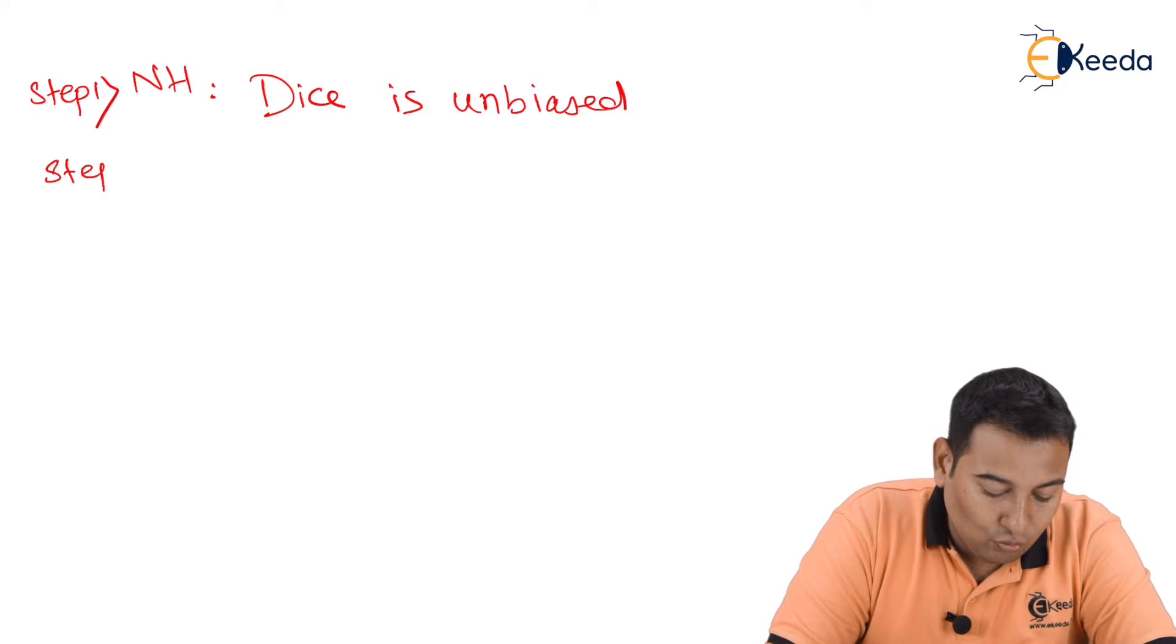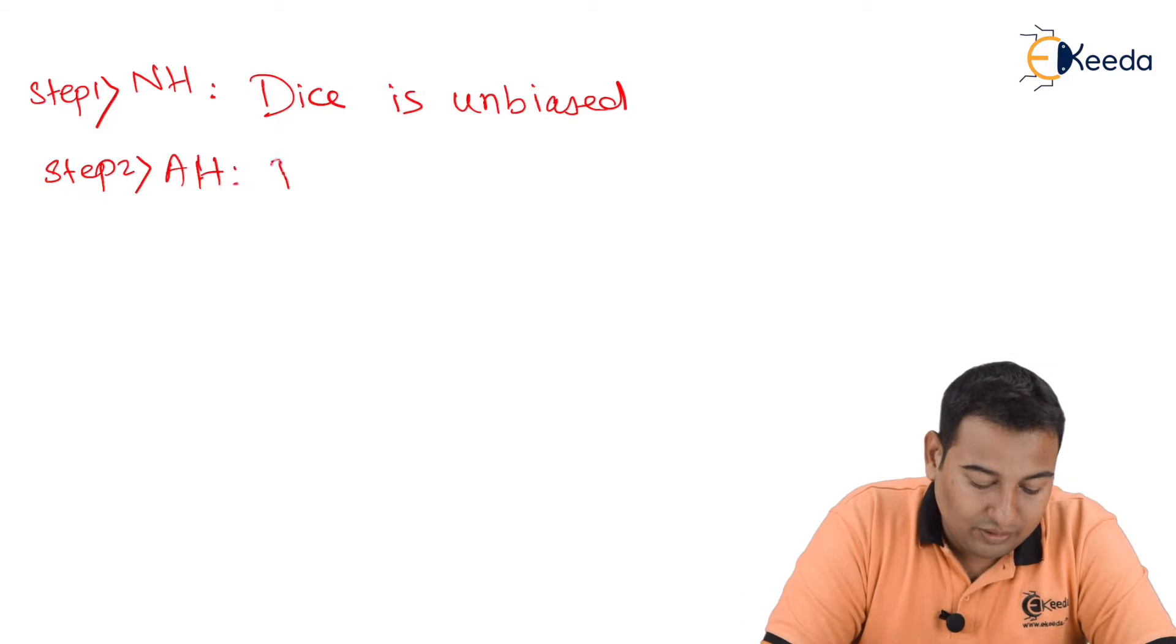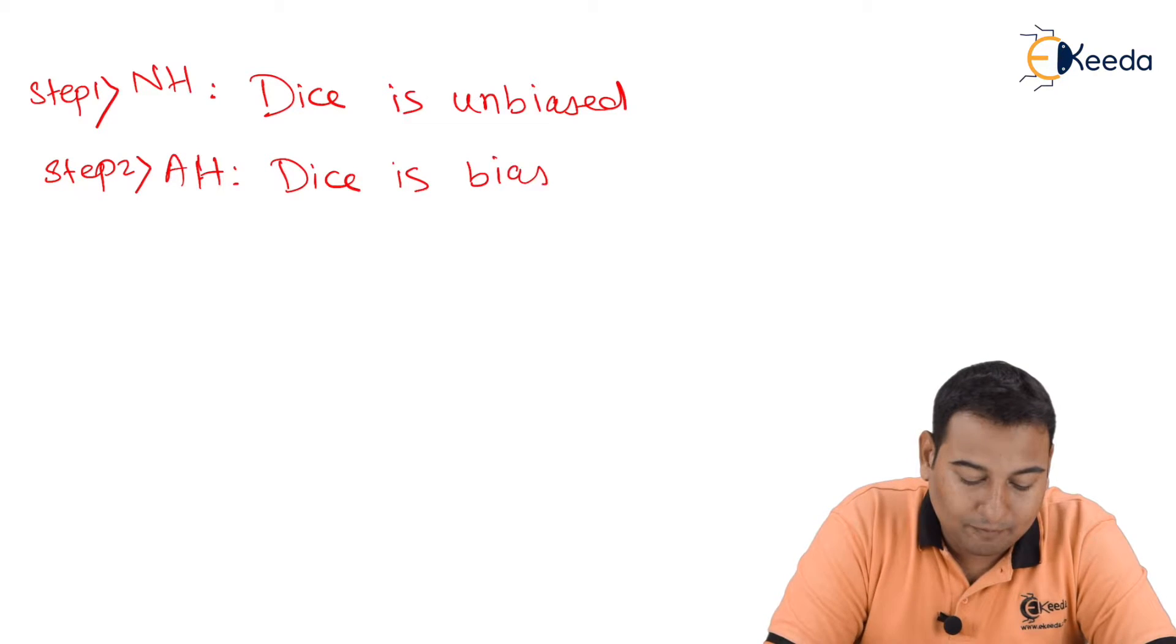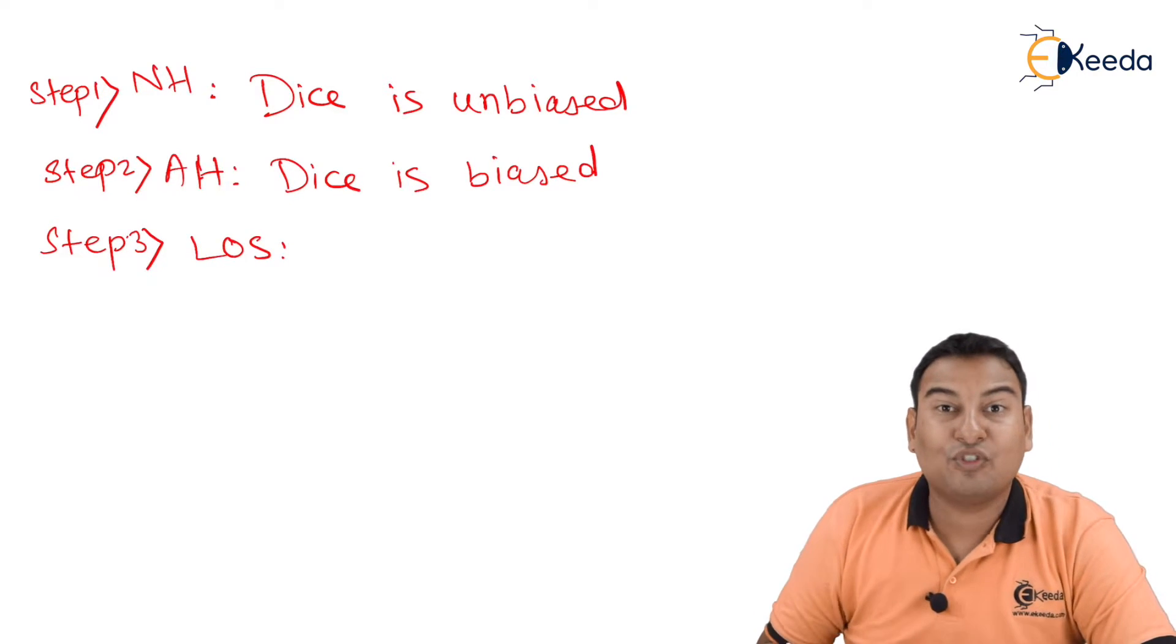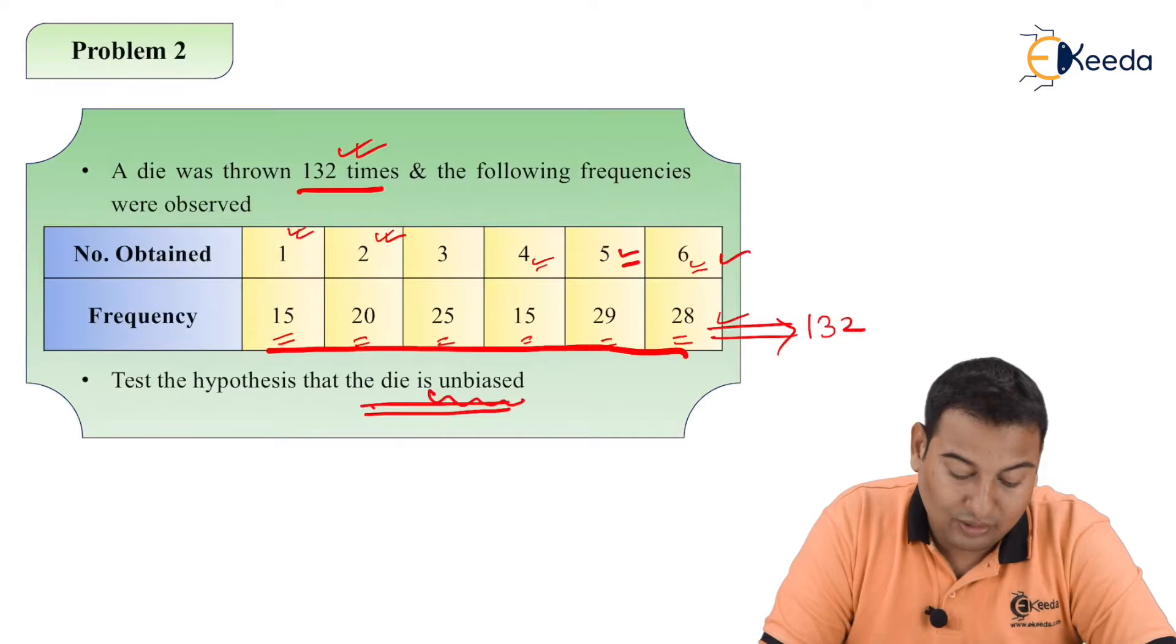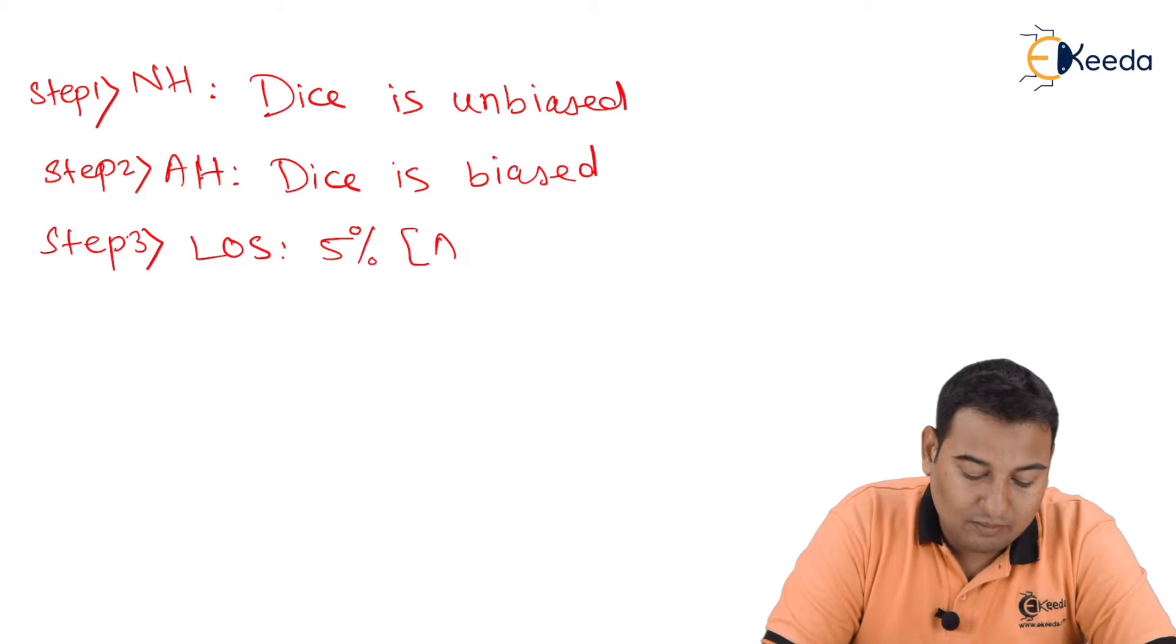In step number two, alternate hypothesis, we're going to take opposite of that. So die is not unbiased, or basically biased. What is your step number three? LOS. Level of significance - nothing mentioned in the problem. Therefore I am going to take it as 5%. This is my assumption.